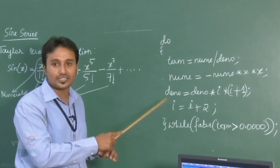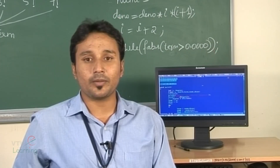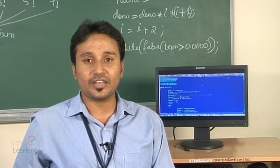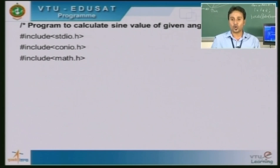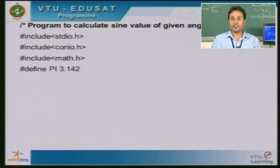This is the logic of the sin series program. Now let us look into the program to calculate the sin value of a given angle. The very first line is #include stdio.h, which is the preprocessor directive for the standard input/output header file. We also make use of two more important header files: conio.h, which stands for console input/output, and math.h, which is used for mathematical operations. After this we have a preprocessor directive used as a symbolic constant.